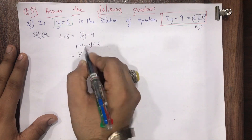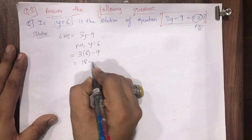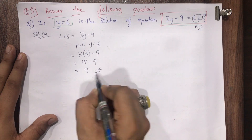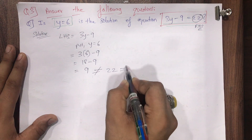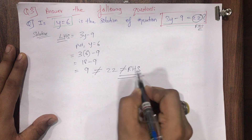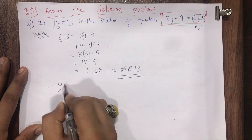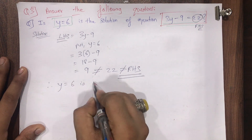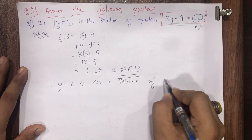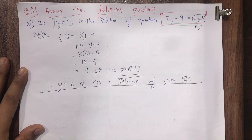So LHS equals 3 multiplied by 6 minus 9. That gives 18 minus 9, which is 9, and 9 is not equal to 22 — it is not equal to RHS. So the left hand side is not equal to the right hand side. Therefore, y equal to 6 is not a solution of the given equation.